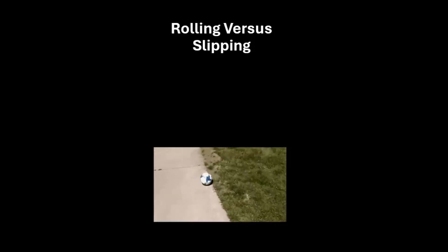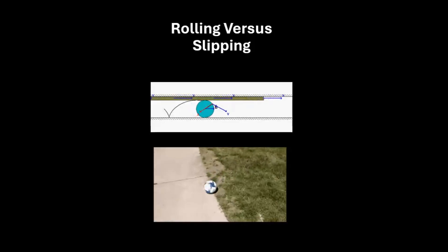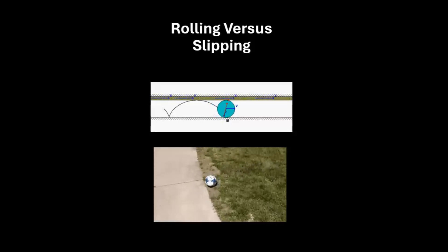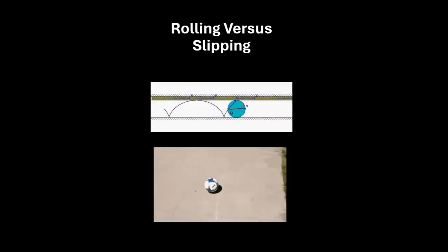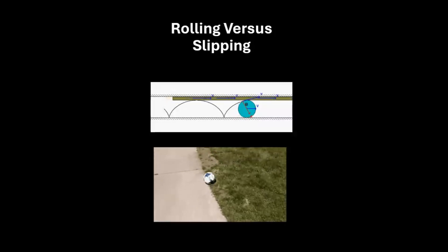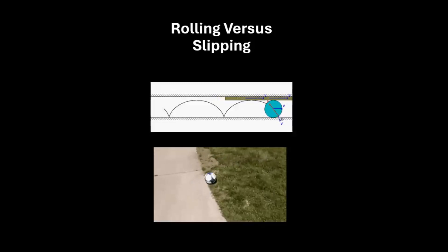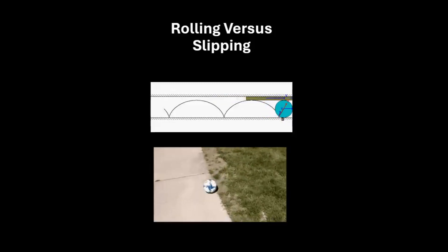Slipping, on the other hand, occurs in a rolling motion when the point of contact between the rolling object and the surface in touch does not have a zero relative velocity to the surface. This leads to a lack of traction and potential loss of control and efficiency in motion.